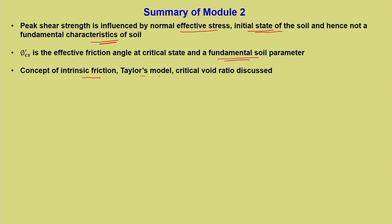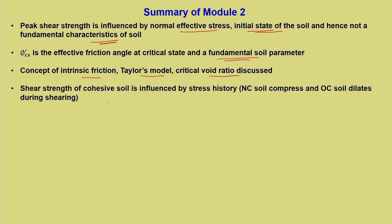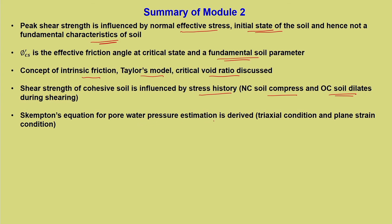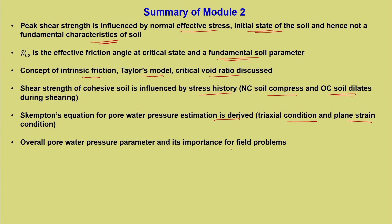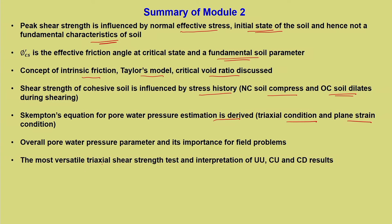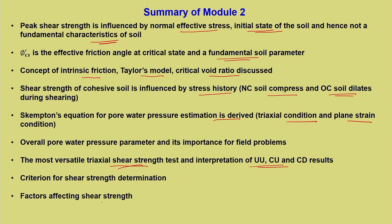The concept of intrinsic friction, Taylor's model, and critical void ratio were discussed. Shear strength of cohesive soil is influenced by stress history — essentially, normally consolidated soil compresses and over-consolidated soil dilates during shearing. Skempton's equation for pore pressure estimation is derived for both triaxial and plane strain conditions. The overall pore pressure parameter and its importance for field problems have been discussed. The triaxial shear strength test, the most versatile of all, and the interpretation of UU, CU, and CD results have been covered. Five criteria for shear strength determination were clearly explained. Factors affecting shear strength and the limitations of the triaxial test have been summarized.